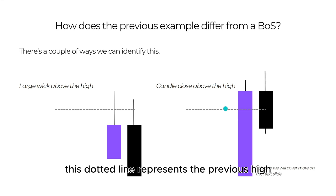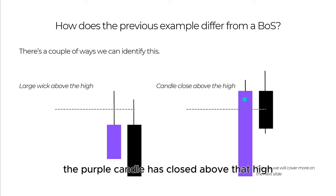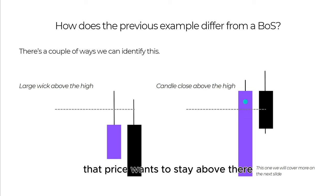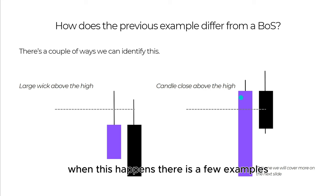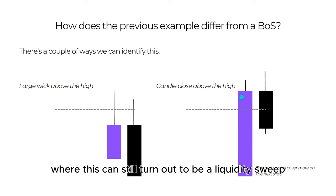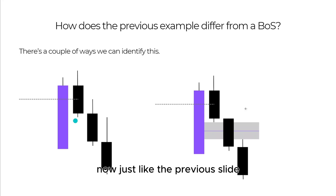Alternatively, an indication that price does want to push higher above that previous high is if we get a candle close above it. As you can see, the purple candle has closed above that high — this is the first sign of commitment that price wants to stay above there. But we are not completely out of the woods; there are a few examples where this can still turn out to be a liquidity sweep.